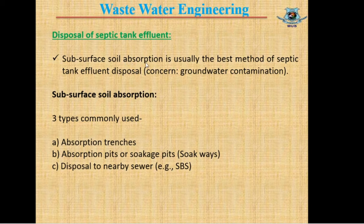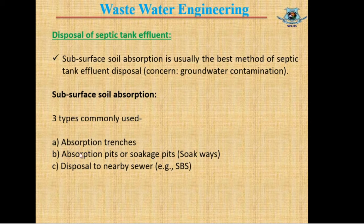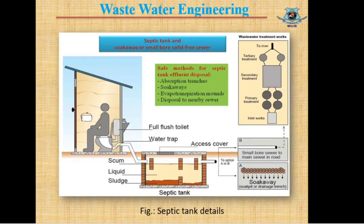Septic tank effluent can be disposed of into subsurface soil absorption, which is usually the best method. Subsurface absorption means restoring the effluent into the soil from a reasonable distance from the groundwater table to prevent groundwater contamination. There are three types: absorption trenches, absorption pits (or soak pits, common in our countries), and disposal to a nearby sewer system, commonly known as the SBS system.